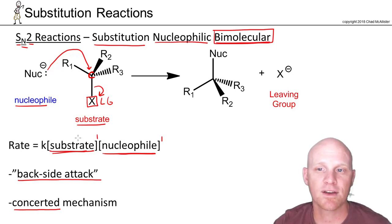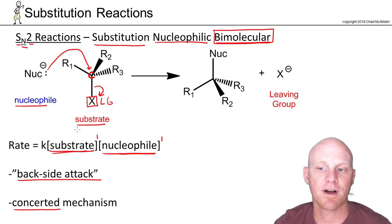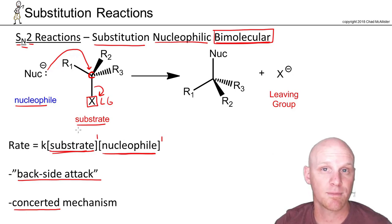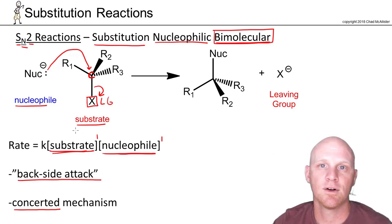To summarize so far: SN2 is bimolecular — both the nucleophile and the substrate are involved in the rate-determining step, which is typically the only step — and therefore both appear in the rate law.